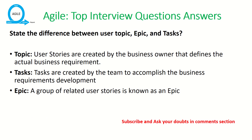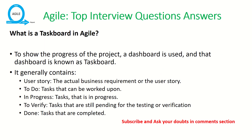The next question is: what is the difference between user story, epic, and task? User stories are created by business owners and define the actual business requirement. Tasks are defined by the team to accomplish the business requirement. An epic is a group of related user stories. An agile task board is a dashboard containing user stories and their progress status — typically categories like to-do, in progress, in review, or done.